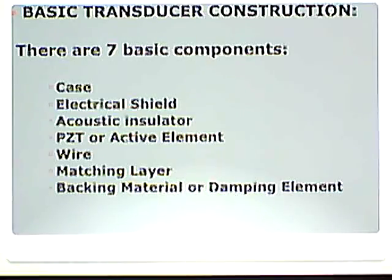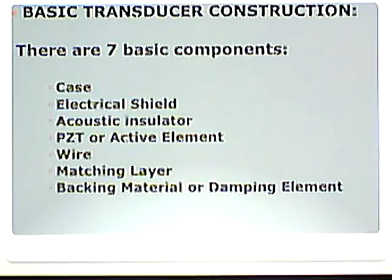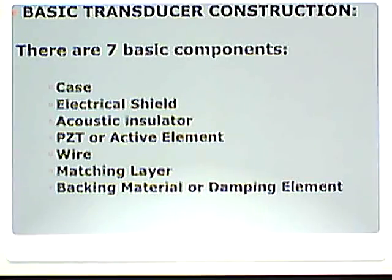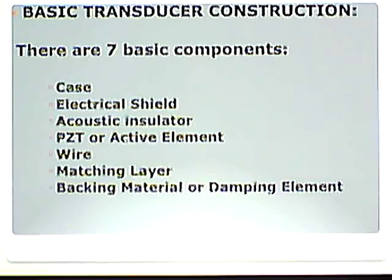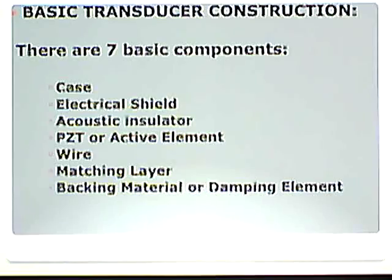So, basic transducer construction. There are seven basic components: a case, electrical shield, acoustic insulator, the PZT or active element or ceramic, the wire, the matching layer, and the backing material or damping element. Go through your book on page 119 — it breaks each one of those down. The most important aspect of each one of those definitions is something you're just going to have to memorize and understand, but these are very simple and straightforward.